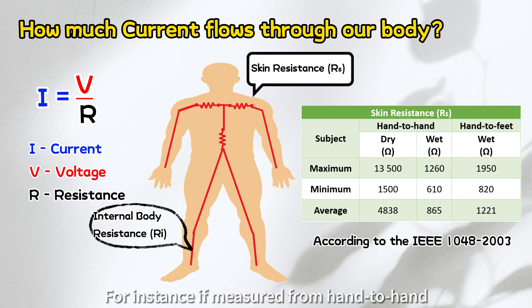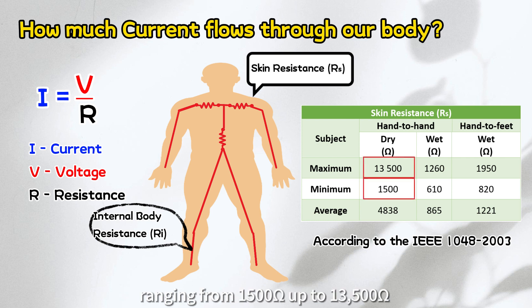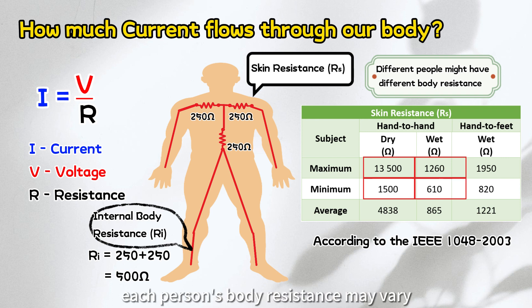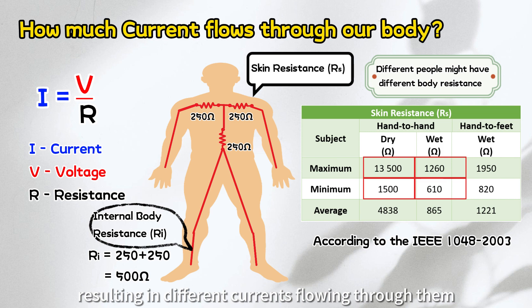For instance, if measured from hand-to-hand, dry skin typically has a higher resistance, ranging from 1,500 ohms up to 13,500 ohms. Conversely, wet skin resistance typically has a lower resistance, ranging from 610 ohms to 1,260 ohms, making it more hazardous in the case of electric shock due to higher current flow. Additionally, the internal body resistance is around 500 ohms. However, it's crucial to recognize that each person's body resistance may vary, resulting in different currents flowing through them.